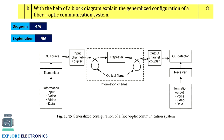With the help of a neat diagram explain the generalized configuration of a fiber optic communication system. Write the architecture or block diagram indicating the optical fiber and explain how optical fiber communication works — focusing on total internal reflection of light inside the fiber. This carries eight marks: block diagram carries four marks and explanation carries four marks. Explain each block in some detail since more marks mean more detailed answer is expected.